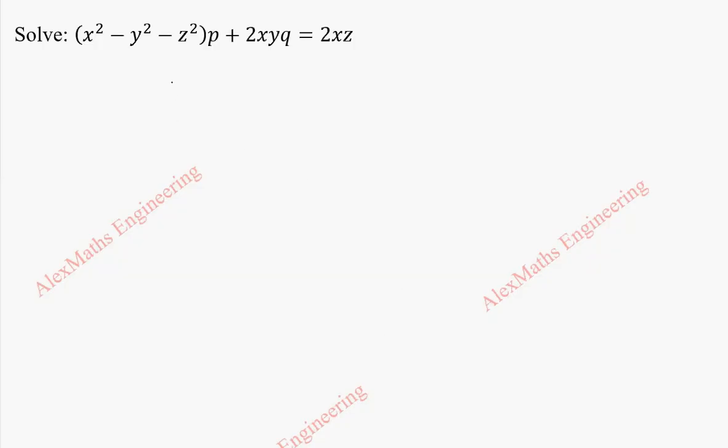This is of the form capital P times small p plus capital Q times small q equals capital R. By comparison, we come to know capital P is x squared minus y squared minus z squared, capital Q is 2xy, and capital R is 2xz.